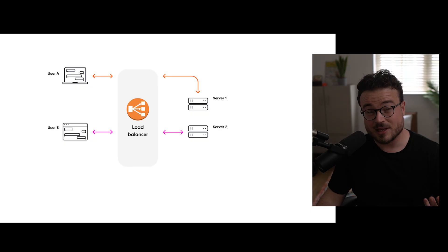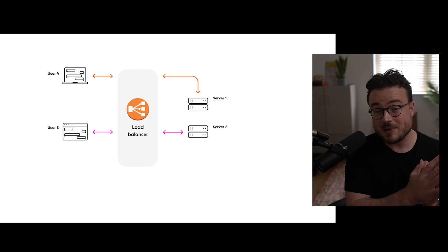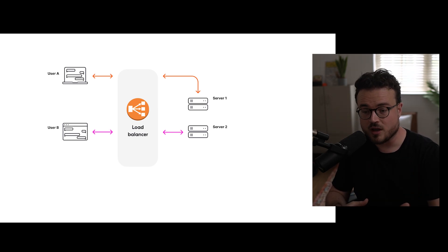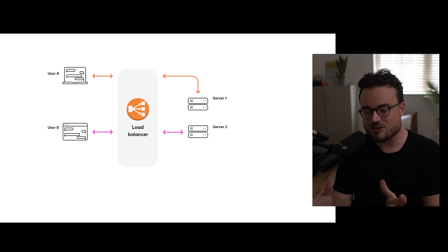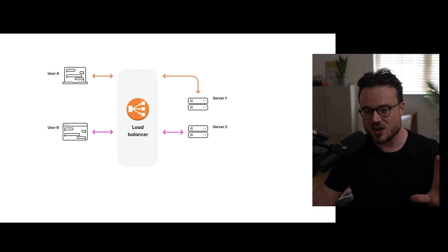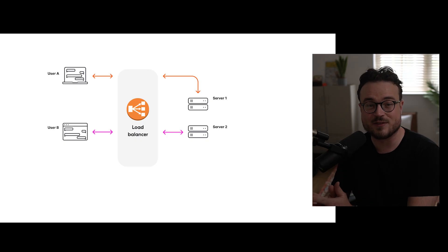Imagine you're building a chat application and the load balancer routes user A to connect to server one, and in true round robin style user B gets connected to server two. What if these two users want to communicate? User A might send a message through server one, but the recipient user B is connected to server two, and there's no link between server one and server two. Server two has no idea what's happening on server one. They've managed to distribute the load, but they're totally disconnected from a state point of view — so there's no opportunity for the message user A sends to actually get delivered to user B.